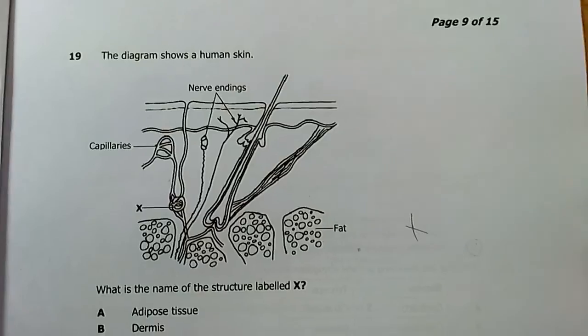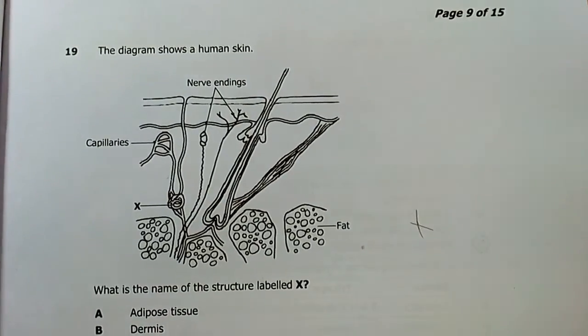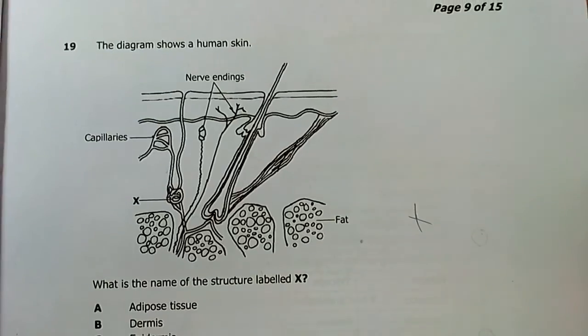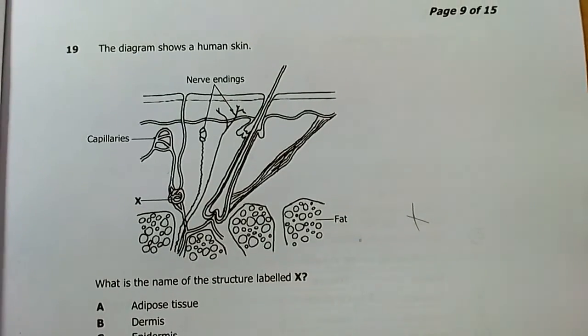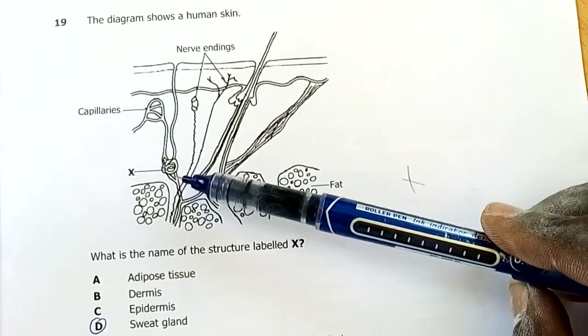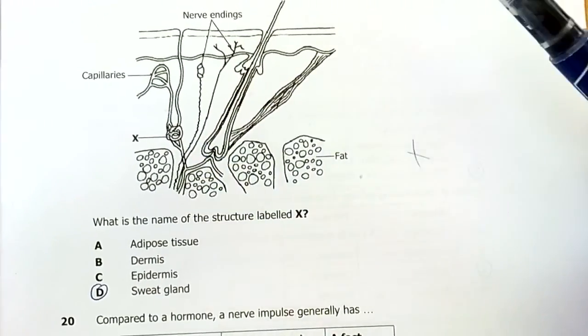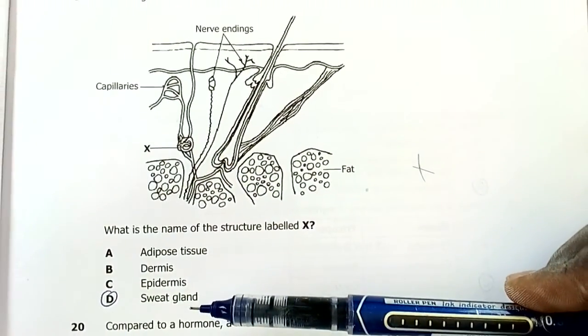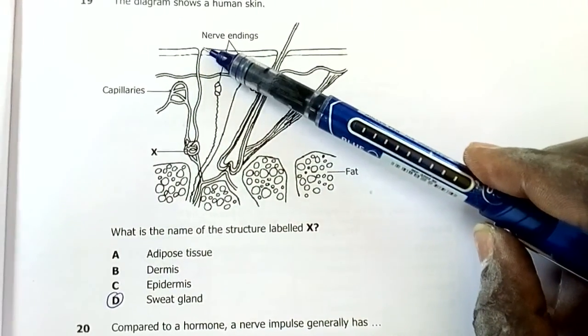Question nineteen: the diagram shows the human skin. We've got nerve endings, capillaries, and structure X. What is the name of structure X? That is a sweat gland. This is a sweat pore and this is a sweat gland.